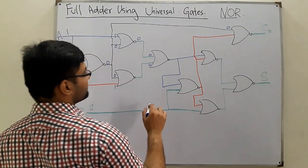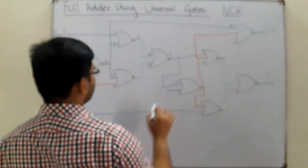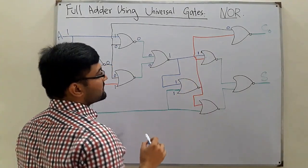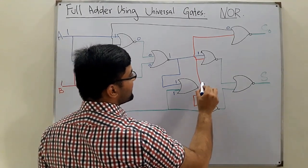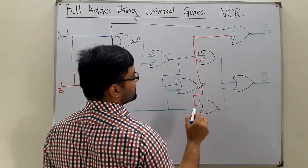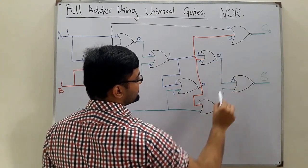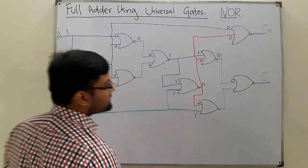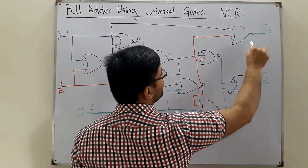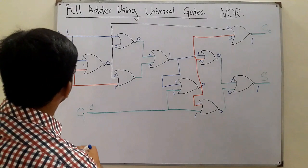We have 0 and 0, and 0 NOR 0 is 1. So we have a 1 here, and C=1 is also here, giving 1 and 1. 1 NOR 1 gives 0 again, so we have zeros there. Then 1 NOR 0 is 0, and 0 NOR 0 is 1. So the sum comes out as 1 and the carry as 1, confirming this circuit diagram is correct.